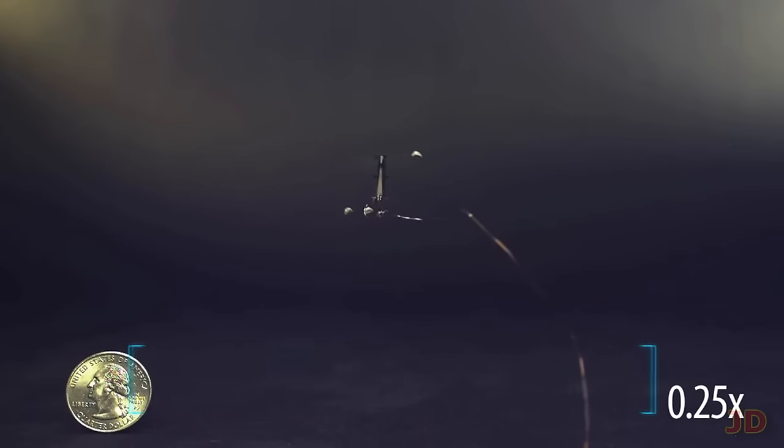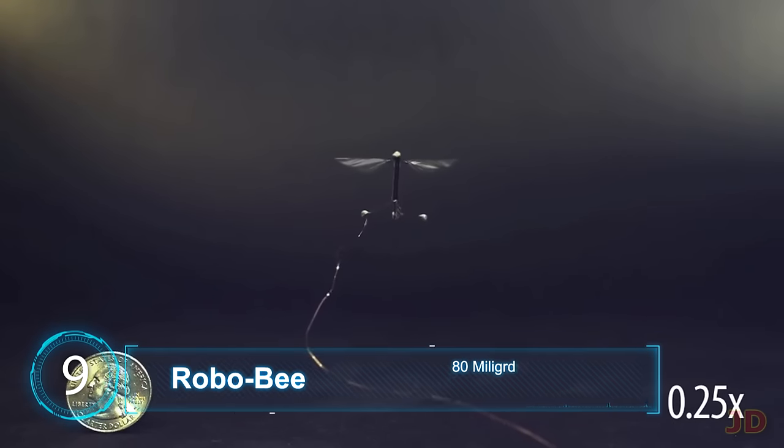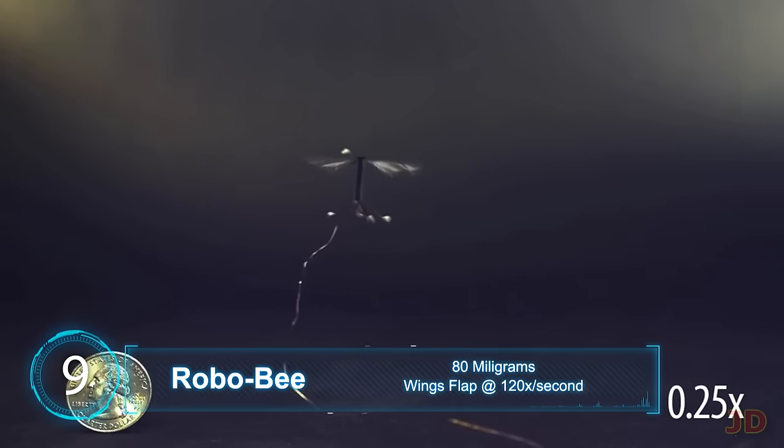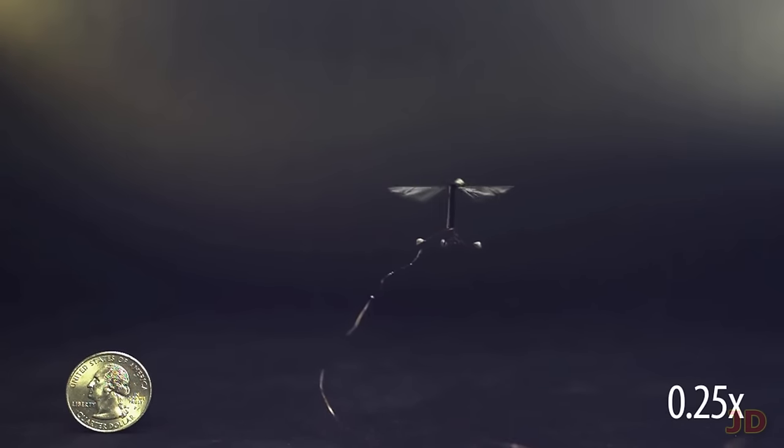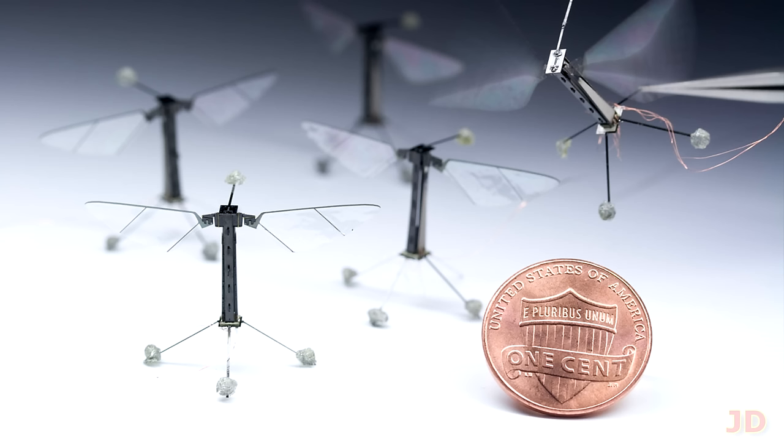At number 9, RoboBee. For over a decade, Harvard University has been working on several tiny flying robots including RoboBee. Although the current version still has a tethered power supply, the RoboBee is only 3cm across and is one of the smallest flying robots. Creators are hoping to use the bot for pollination, search and rescue, and even surveillance missions in the future.